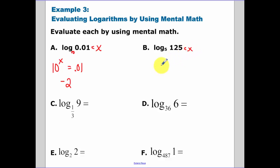Again, set this equal to x. 5 to what power x equals 125? 5 to the third equals 125. So therefore, x equals 3.